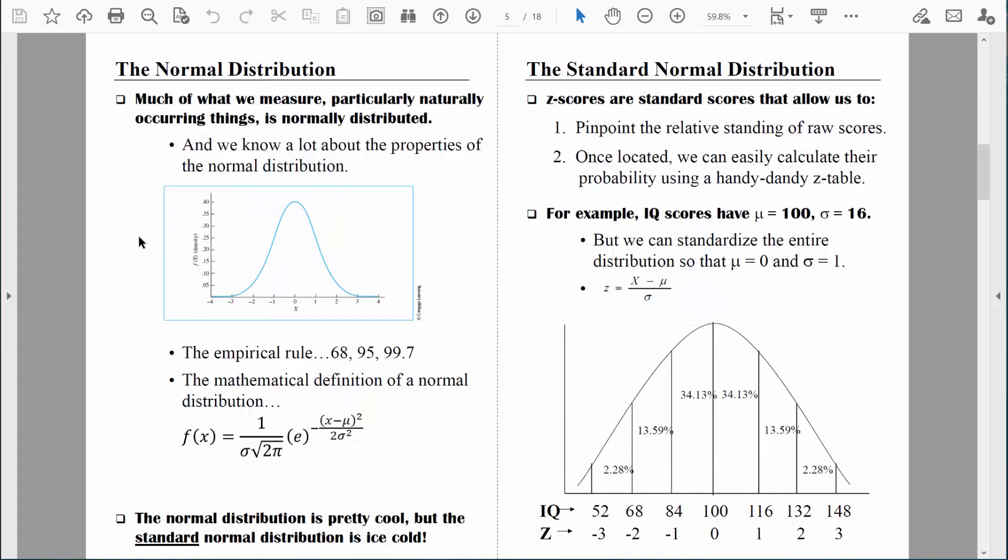We focus so much on the normal distribution because much of what we measure that's naturally occurring is normally distributed. We've talked in the past about people's heights or people's weights. Most men pile up somewhere around 5'10". There are not many guys who are 6'10", and not many guys who are 4'10". The intelligence of a person is a normally occurring thing. And again, most people pile up somewhere right around 100. There are not all that many people with IQs around 140. And there are not all that many people with IQs around 60. Most naturally occurring things that we measure are normally distributed. And many inferential statistics are based on the idea that the data we have is normal.